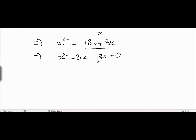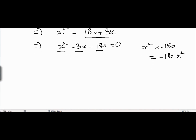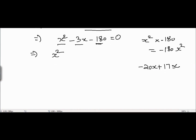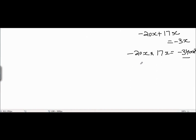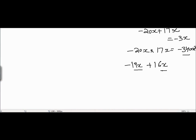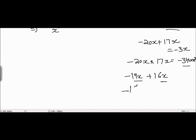Now we solve this equation by the method of factorization. To factorize, we check the product of the first and last terms: x squared times 180 equals 180x squared. We need to split the middle term minus 3x into two terms whose product equals minus 180x squared. Trying minus 20x plus 17x gives minus 3x, but their product is minus 340x squared — not what we need. Continuing, we try minus 15x plus 12x, which also equals minus 3x, and their product is minus 180x squared — correct.